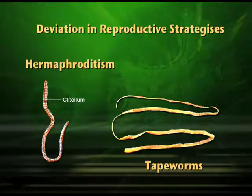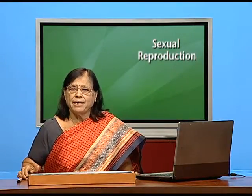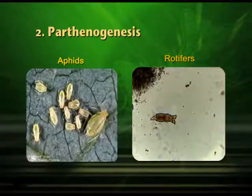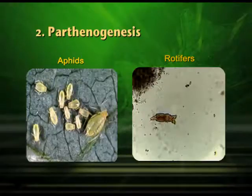Coming back to earthworm as an example of hermaphroditism — tapeworm, which we sometimes have in our alimentary canal, is another example. Tapeworm is made up of many segments, and each segment is a full individual having both testis and ovary. Another deviation in reproductive strategy is parthenogenesis, where an egg, without undergoing fertilization, develops into an adult. Good examples are aphids and rotifers. Scientists have used this technique — by pricking an egg to initiate development, or by taking any body cell and initiating the developmental process. Our famous Dolly the sheep is an example of that.